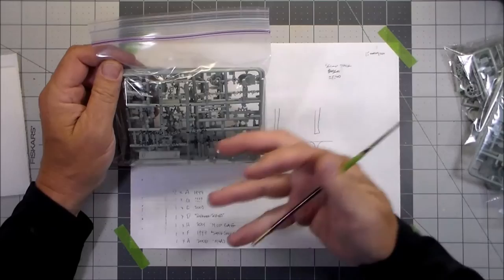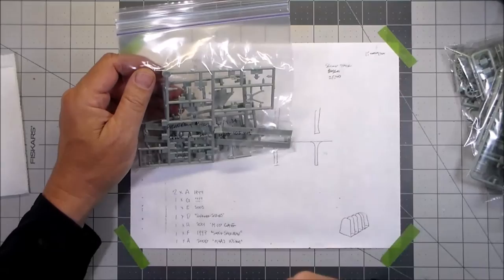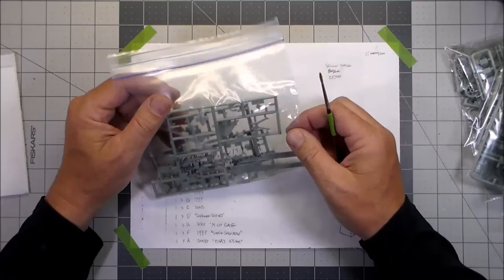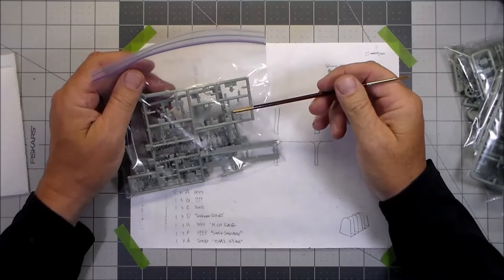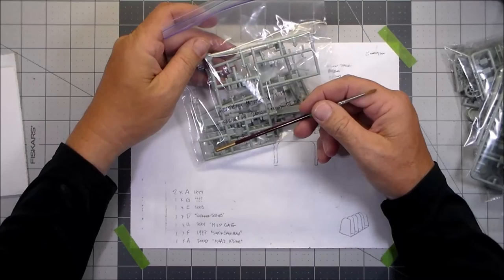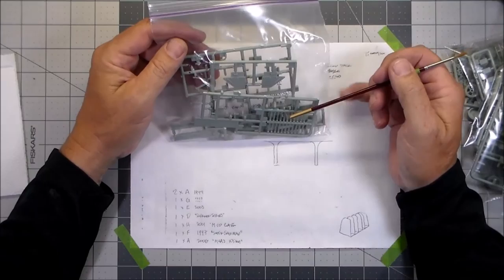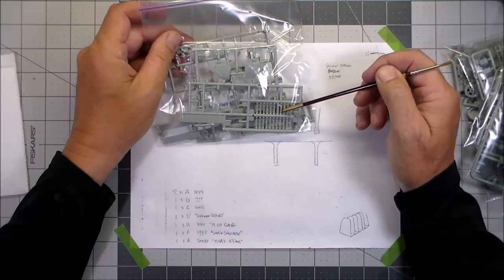And then finally we have another sprue A, this one dated 2006. And on the back of the label on this one it says M4A3 105 millimeter. There's quite a few parts I used off of that, including the travel lock for the 75 millimeter. There's an extra travel lock here with the top pivot clamp, some periscope covers, looks like an infantry radio for the back for communicating with the tank crew, periscopes.